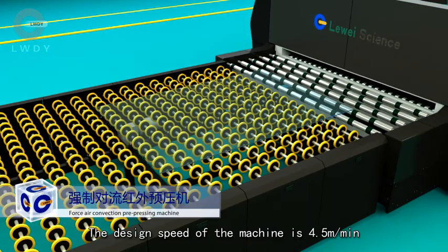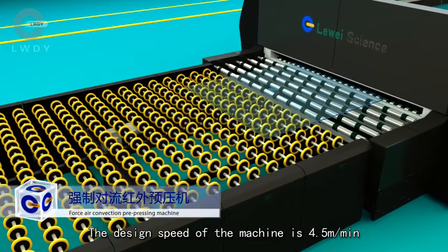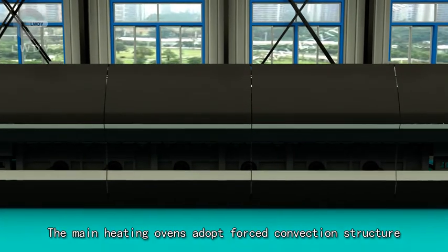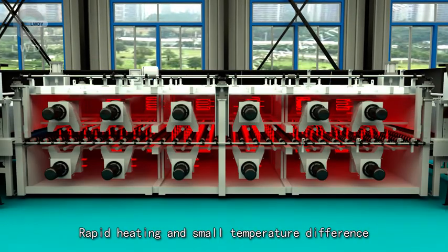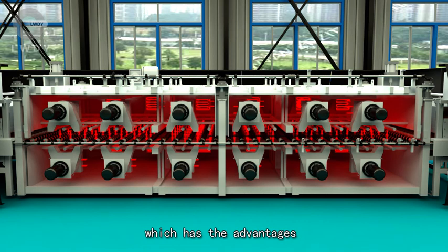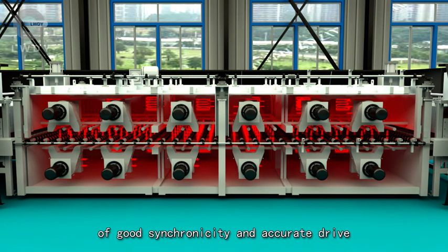The design speed of the machine is 4.5 meters per minute. The main heating oven adopts forced convection structure for rapid heating and small temperature difference. The front and back nip rollers take independent drive structure, which has the advantages of good synchronicity and accurate drive.